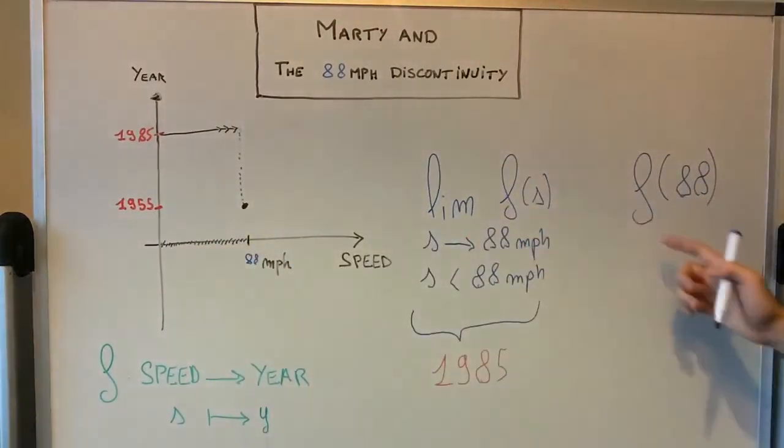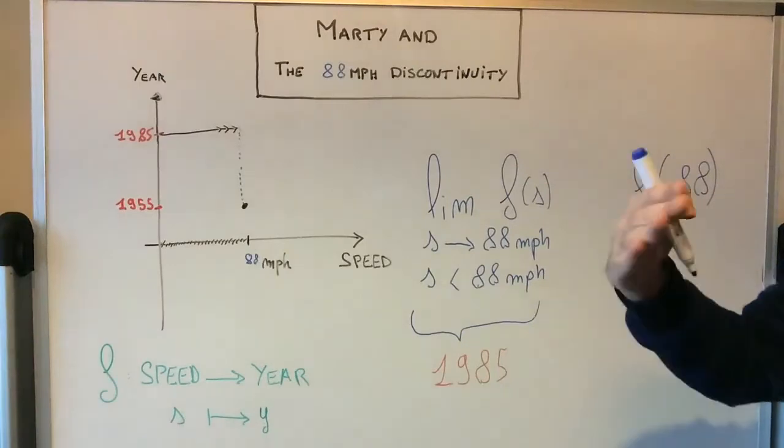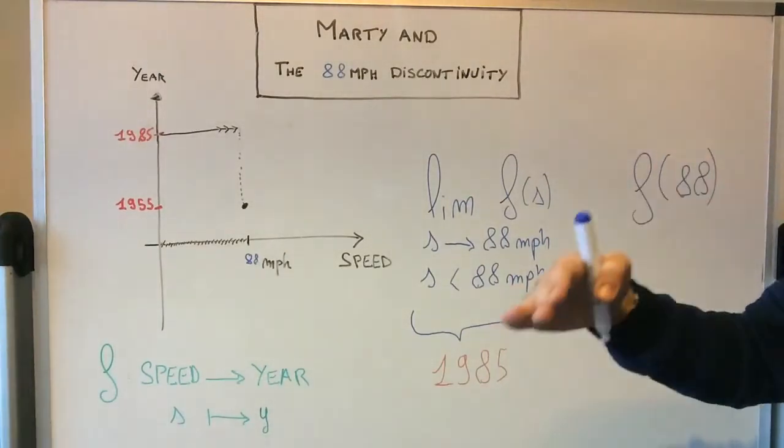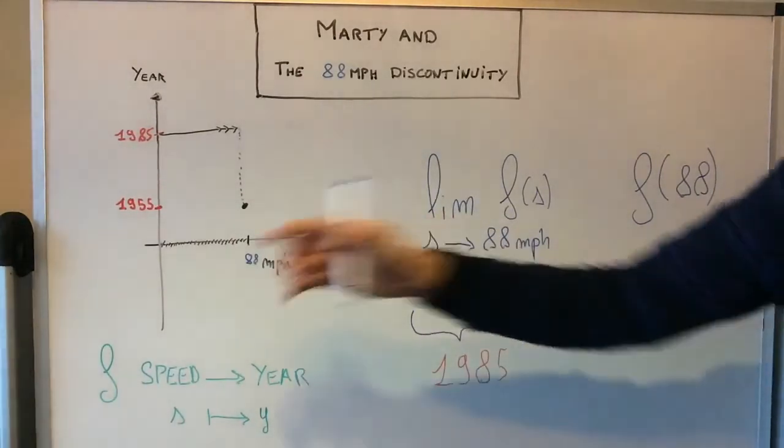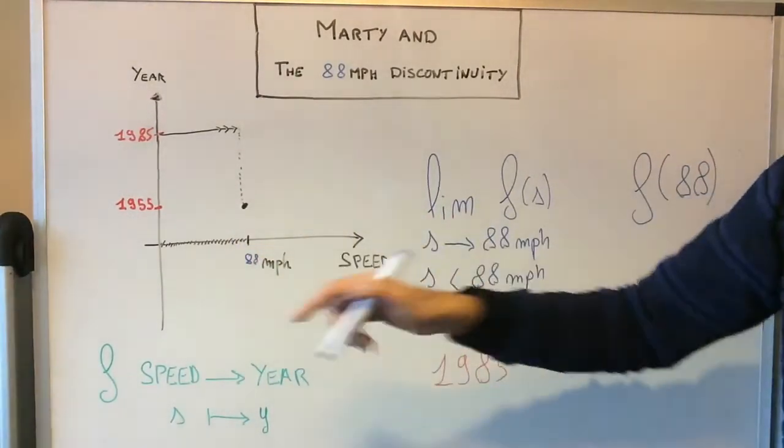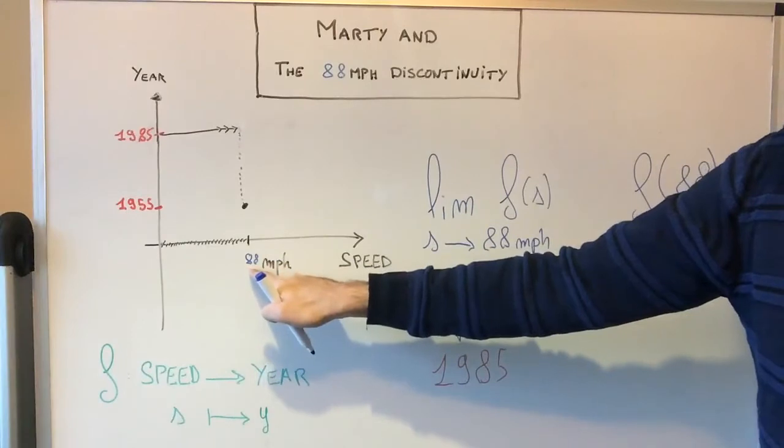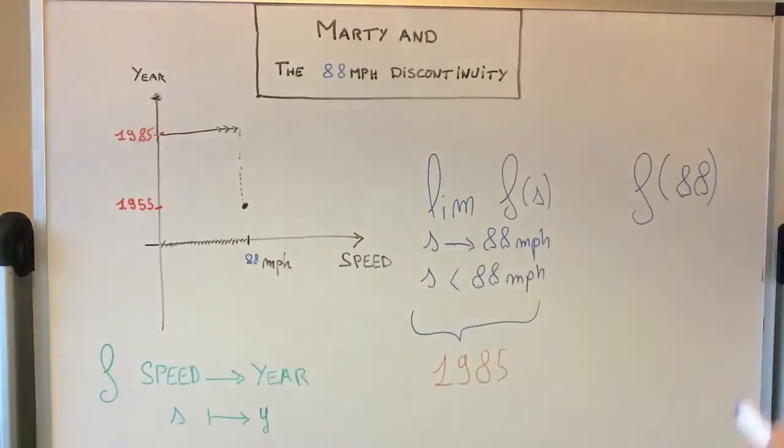Because at 88, I just reached the transition and I go from 1985 to 1955. That's the exact value when it actually happens.